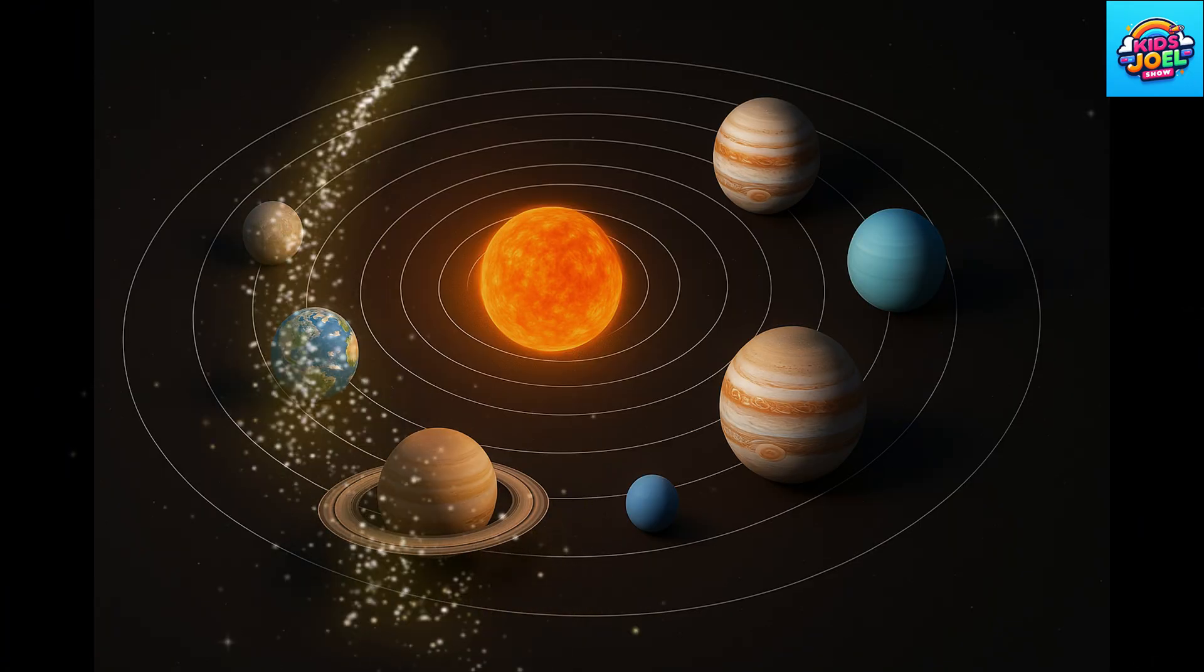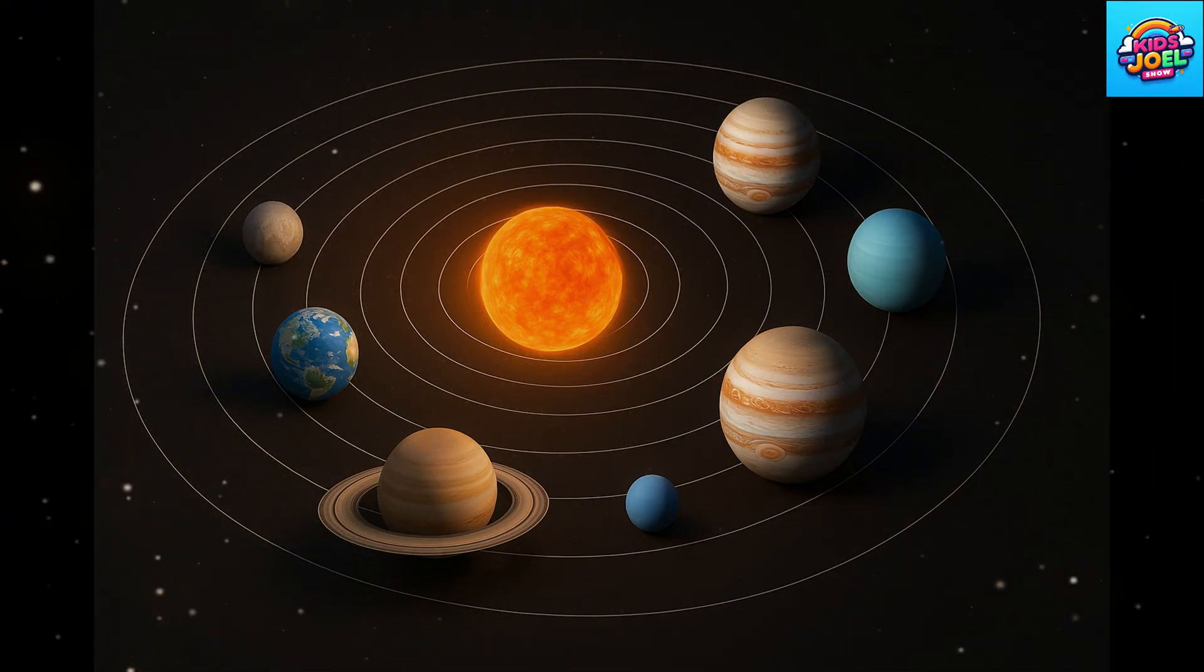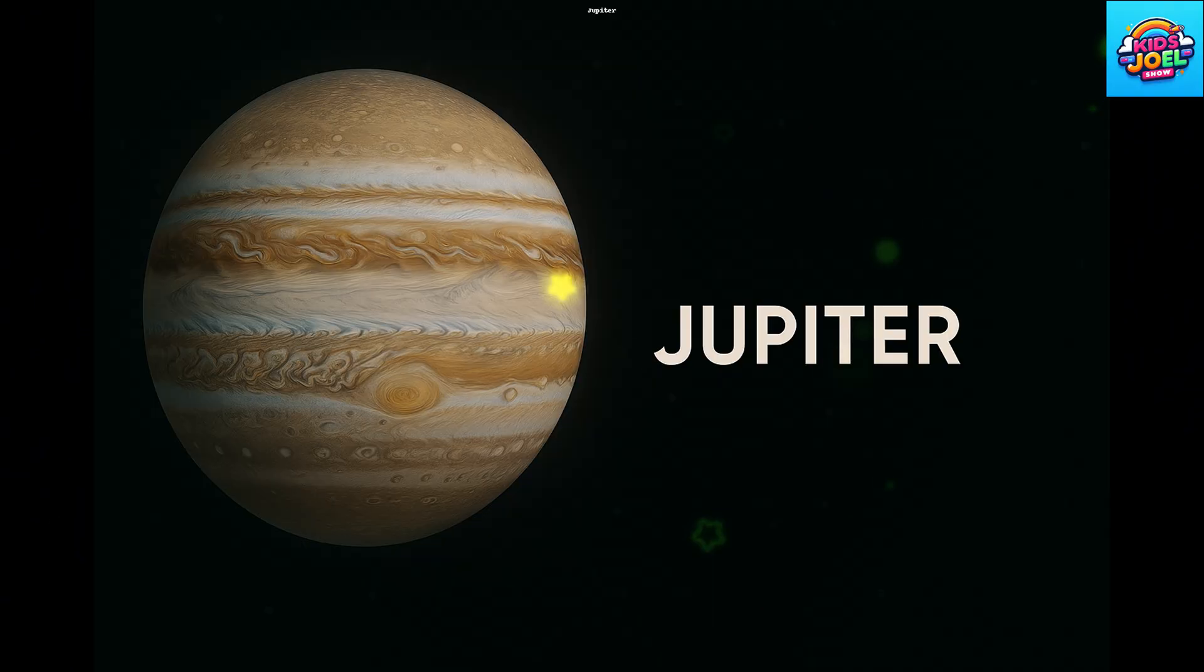We spin around the sun, in space so wide, eight planets going on a solar ride. From Mercury out to Neptune's shore, let's learn the planets and so much more.